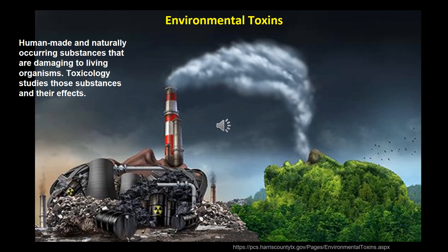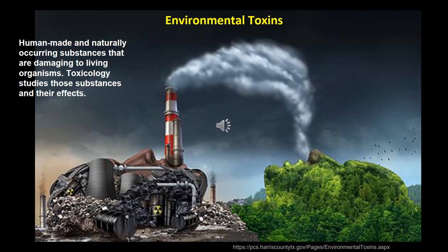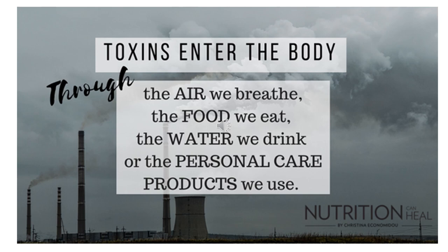Here's a definition of environmental toxin: they're made by human processes and are substances that damage humans and other living organisms. Toxicology is the study of those substances and their effects on organisms. Environmental toxins can enter the human body through the air we breathe — going into our respiratory system, our lungs, and thus our bloodstream — the food we eat, the water we drink, and personal care products we use. They can all get into our blood, move all around our body, and cause problems with different tissues.